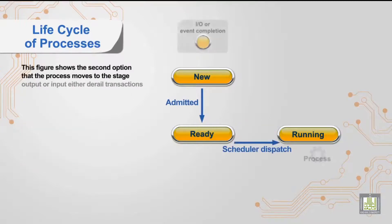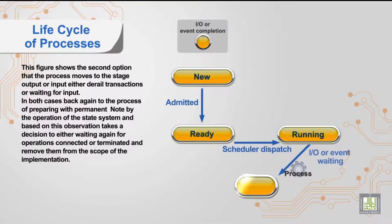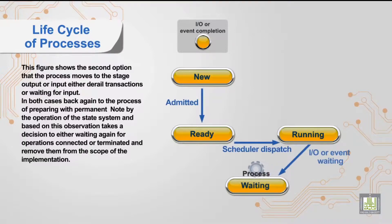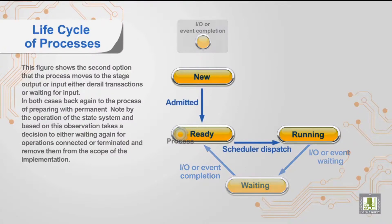This figure shows the second option: the process moves to the input or output stage, either due to derailed transactions or waiting for input. In both cases the process returns to the preparation stage. The operating system monitors this state and, based on its observation, decides to either wait again for connected operations or terminate and remove the process from the scope of implementation.